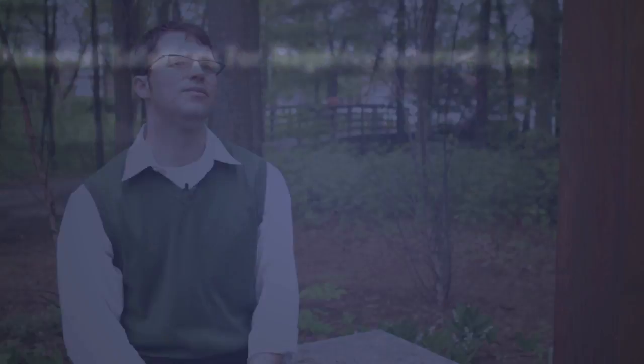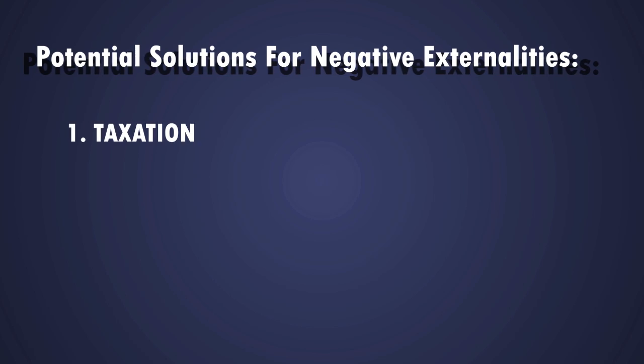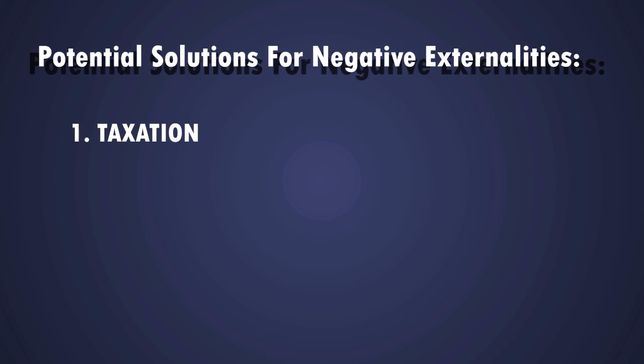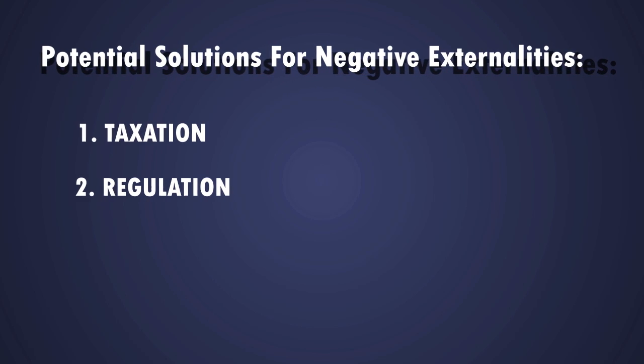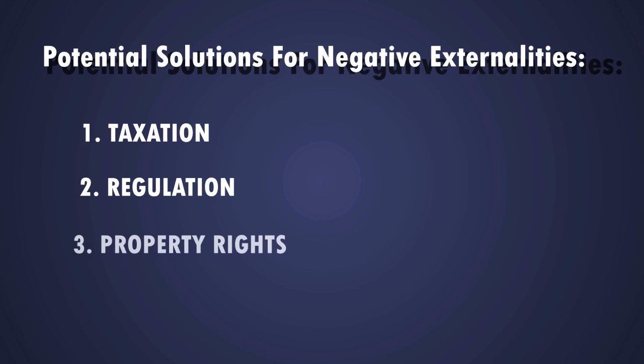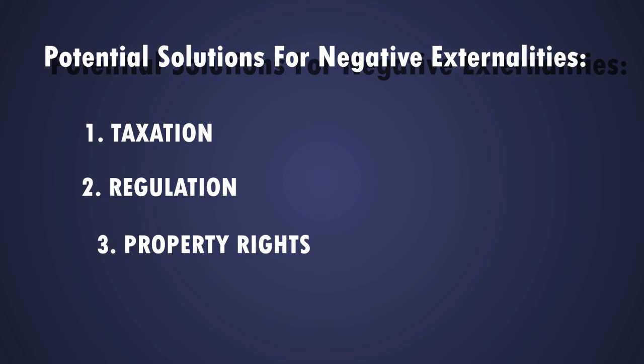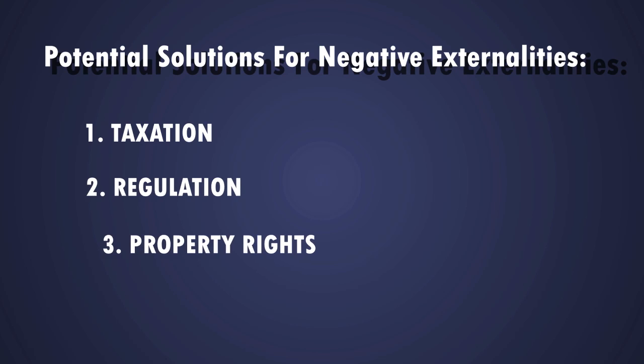There are three broad categories of ways in which we can address these externalities. The first is taxation. The second, regulation. And the third is by using property rights and the Coase theorem. Let's talk about these individually.